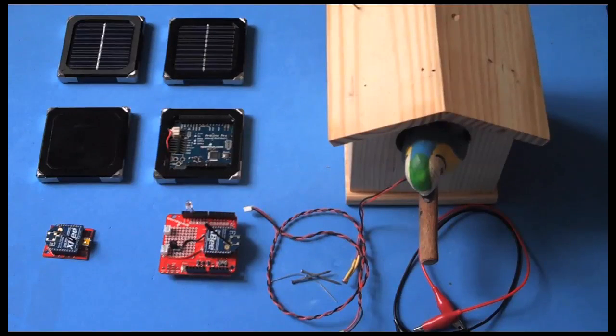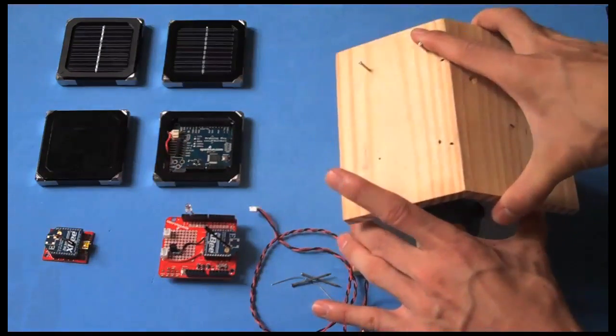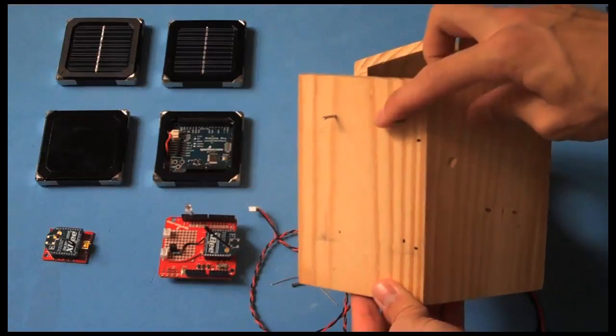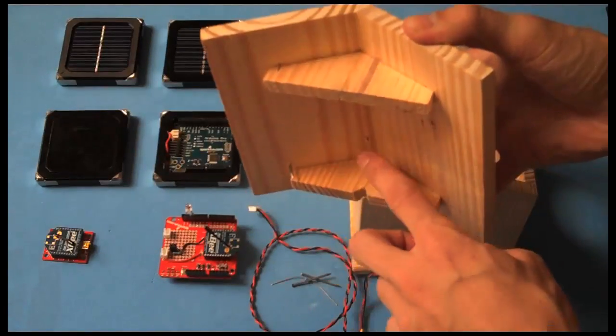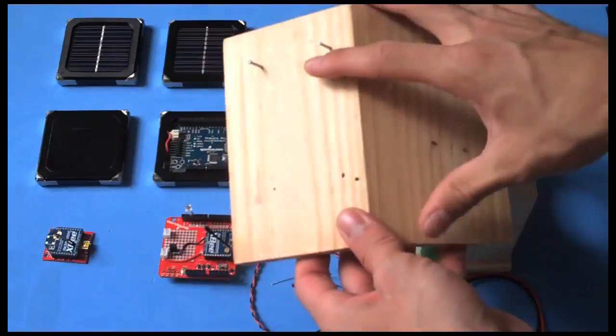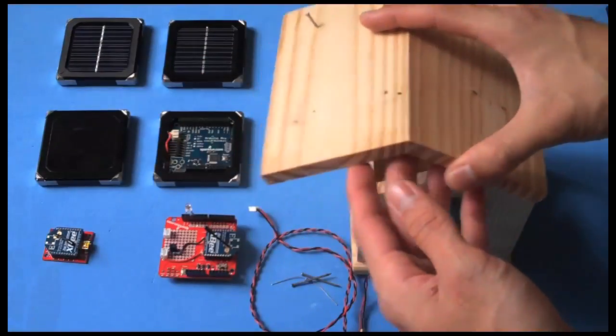The first step in assembling your birdhouse is to take the roof of the birdhouse and add two nails. These nails should come all the way through the birdhouse. This is how we're transmitting power from the roof to the inside of the birdhouse where all of our other electronics are.